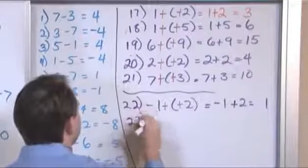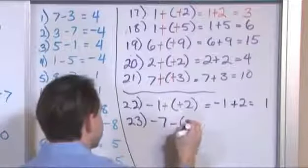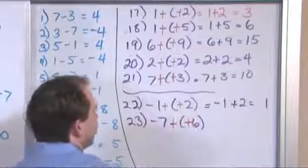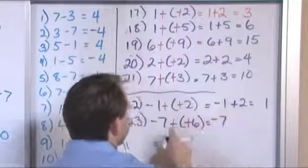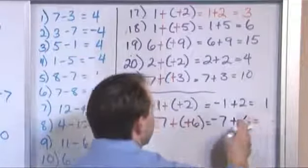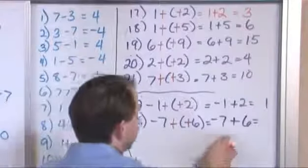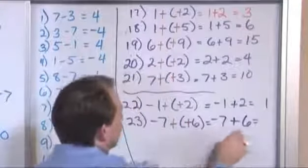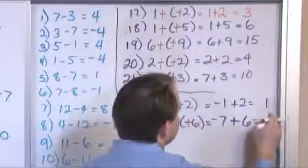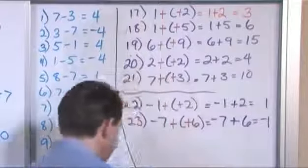Problem 23: negative 7 minus negative 6. Same thing — we have the two negatives together, so we add the opposite. What we're going to have is negative 7 plus 6. Negative 7 plus 6 — you're adding two opposite signs, so you always end up subtracting in that case. The answer is going to be 1, but the sign comes from the larger absolute value, so it's going to be negative 1.